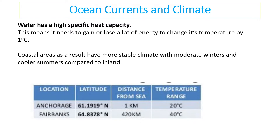Ocean currents impact climate because water has a high specific heat capacity — meaning it takes a lot of energy to change water's temperature. As a result, coastal areas have a more stable climate. For example, two places at the same latitude: one 1 km from the sea has a temperature range of about 20 degrees over the year, while one 420 km inland can have a range of 40 degrees.